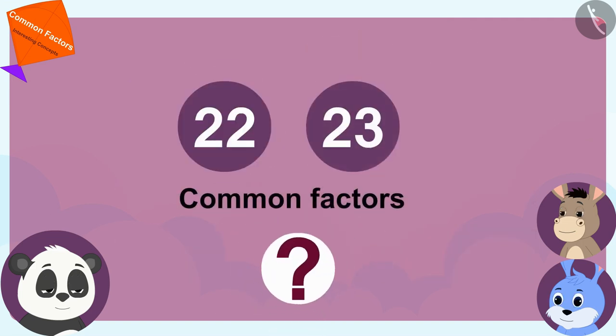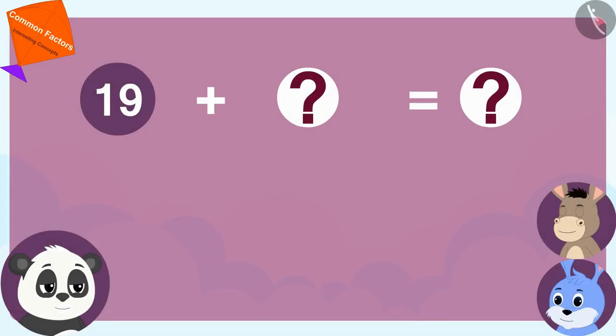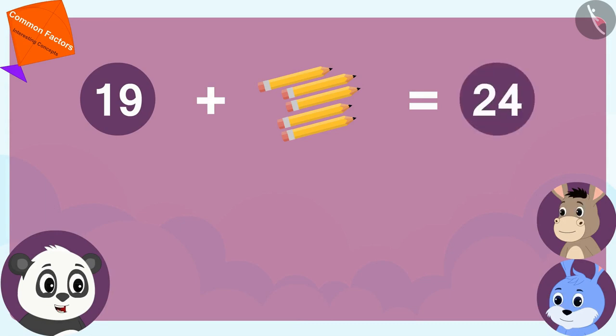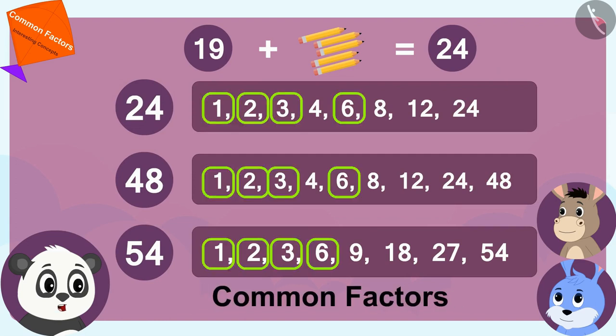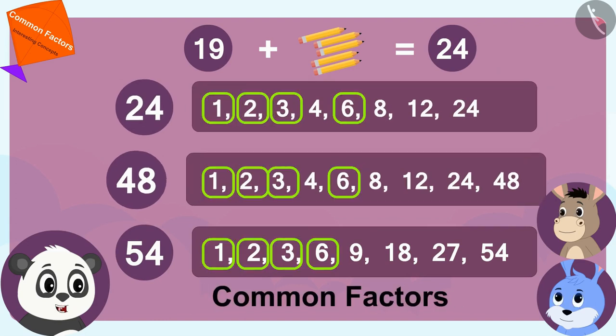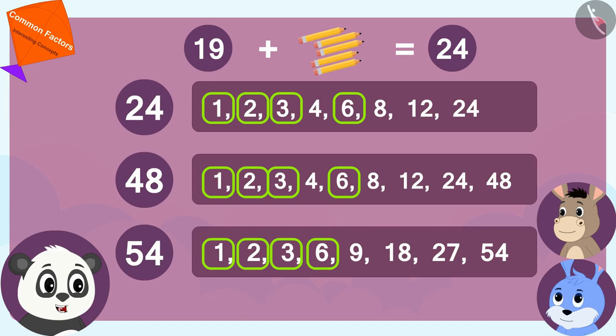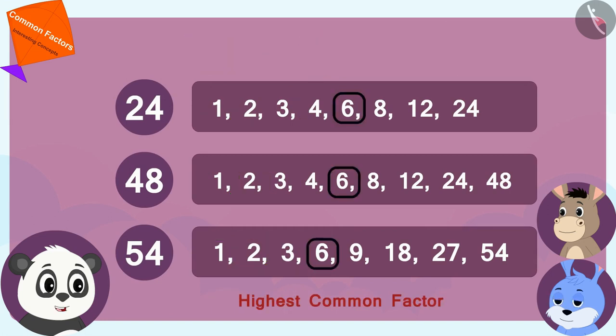Will we get six as a common factor in 22 and 23? Golu asked Bunny and Bola. No, said Bunny. Oh wow! If I add five pencils to 19, there will be a total of 24 pencils. Here, the numbers one, two, three, and six are the common factors of 24, 48, and 54, and six is their highest common factor.